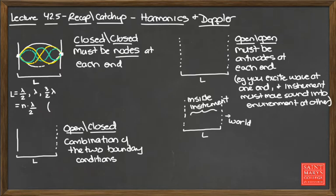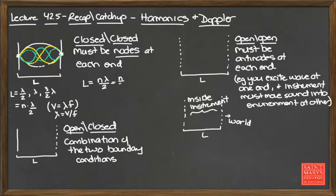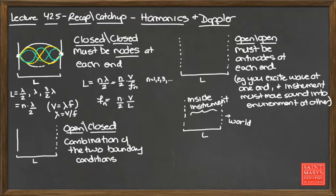To get the formula, we made the connection that given some wave speed v, there is a relationship between wavelength and frequency. The wavelength equals the wave speed divided by the frequency. So if L equals n·lambda/2, that is the same as n/2 times the wave speed divided by the frequency F_n, where n can equal 1, 2, 3, … Solving for frequency: F_n = nv/(2L). This is the case for closed-closed systems.